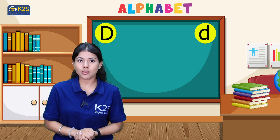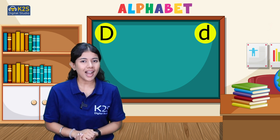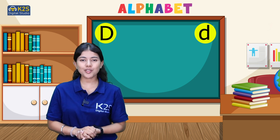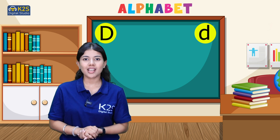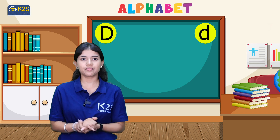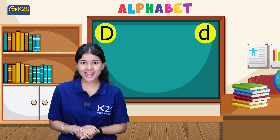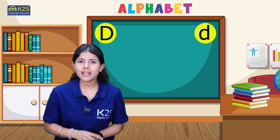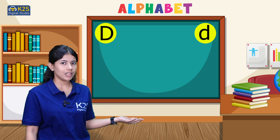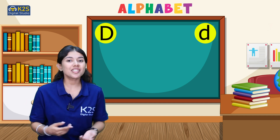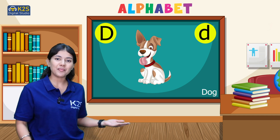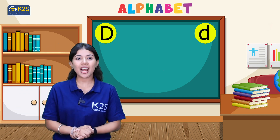Do you know how this letter sounds? I'll tell you — D sounds like 'D'. Now we'll move forward and get some new words with the letter D. Ready? Come on! Can you tell me an animal whose name starts with letter D? Correct, it's a dog! Dog starts with letter D.